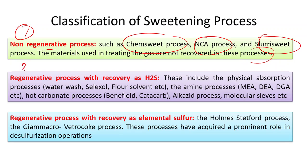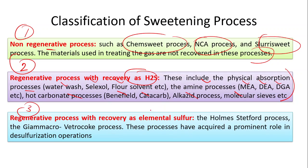The second category is the regenerative process with recovery as H2S. This includes physical absorption processes such as the water wash process, select salt process, and flow solvent. The amine process is also an example — including monoethanolamine, diethanolamine, etc. The hot carbonate process, for example Benfield and Catacarb, as well as the alkyl acid process and molecular sieve process, are all examples of regenerative processes where materials are regenerated repeatedly for H2S removal.